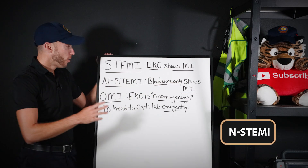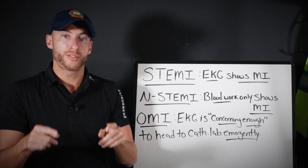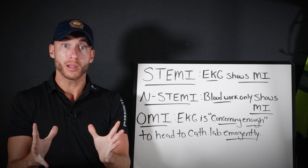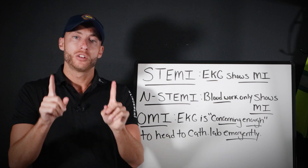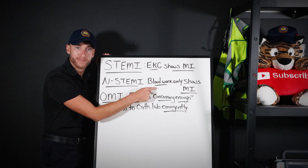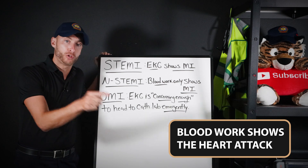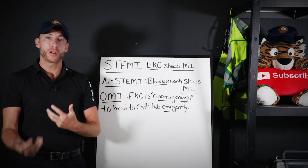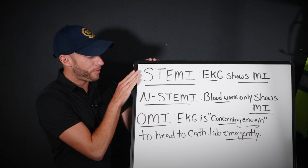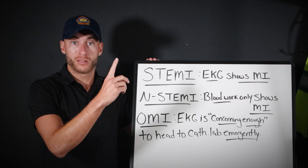What about an N-STEMI? The N stands for non-ST elevation MI. The ST elevation is found on the EKG, so an N-STEMI means you're a paramedic in the ambulance, your patient has those same symptoms, but you do an EKG and you don't see a heart attack. This is where there can be delays in care, because the only way to uncover an N-STEMI is blood work. It's said that roughly 20–30% of N-STEMI patients needed to go right to the cath lab, but they end up sitting in the ER instead.